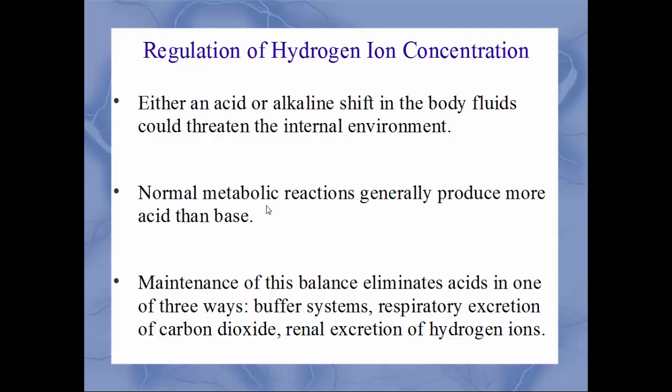Regulating hydrogen ion concentration is critical because even a small shift to higher or lower pH can have a tremendous impact on the body. Most metabolic reactions end up producing more hydrogen ions, so the body has various mechanisms to regulate and eliminate them. The three mechanisms are: the buffer system, the respiratory excretion of carbon dioxide, and the renal excretion of hydrogen ions.